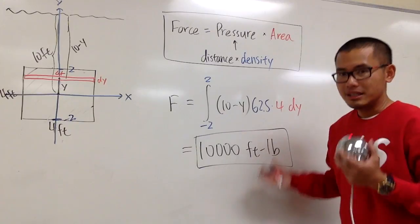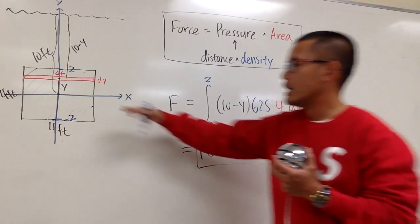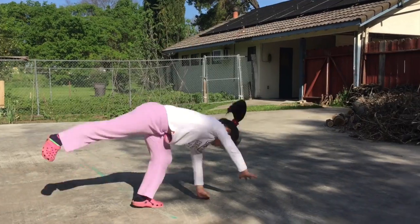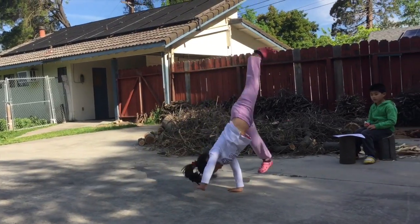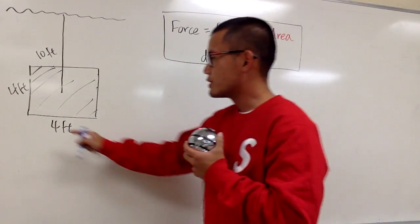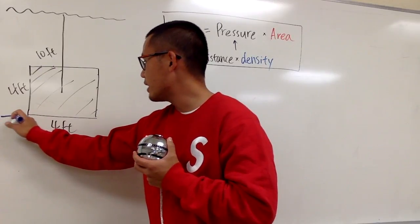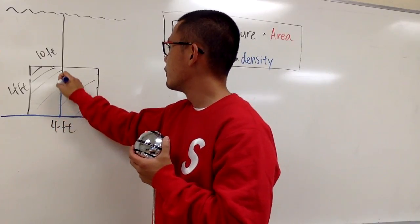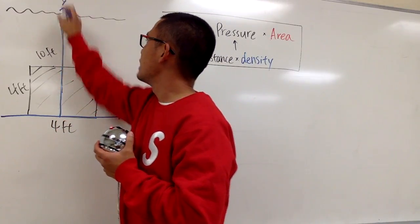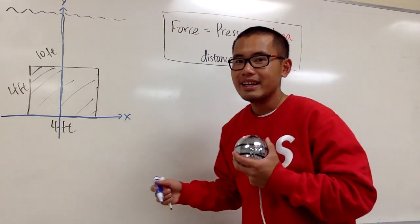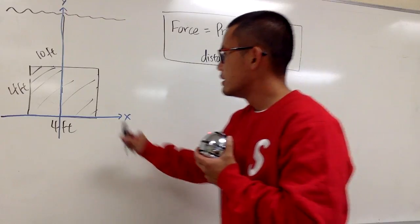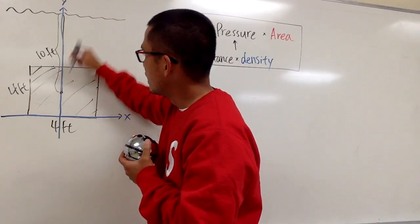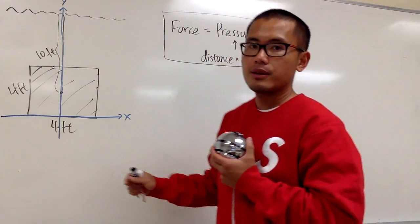Now let me show you what happens if I put the x-axis down at the bottom of the plate. I'll place the x-axis at the bottom and keep the y-axis through the middle. Remember, the water surface to the middle of the square is 10 feet.